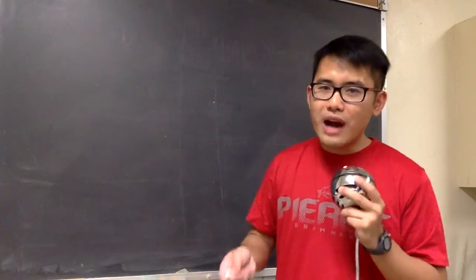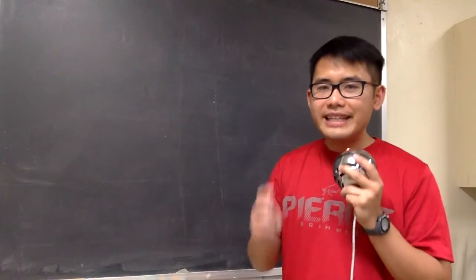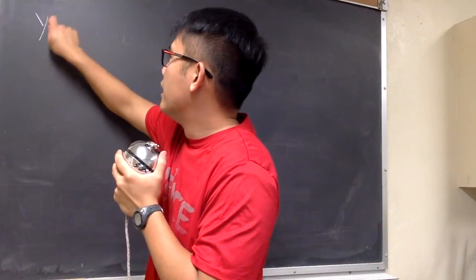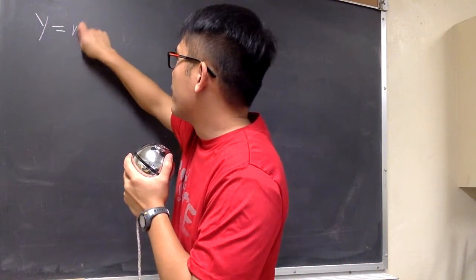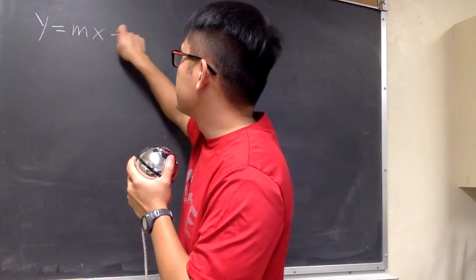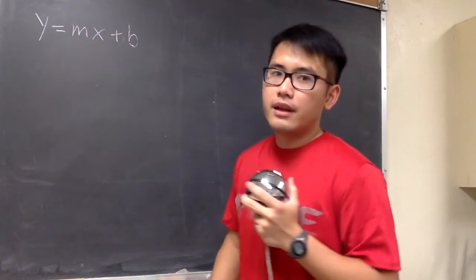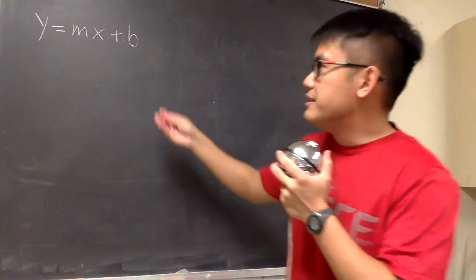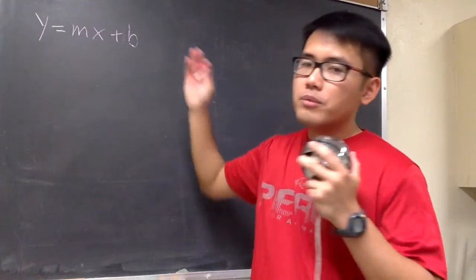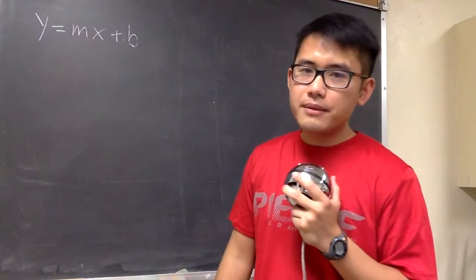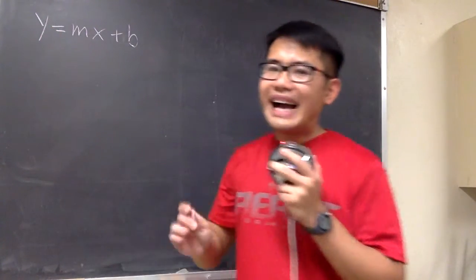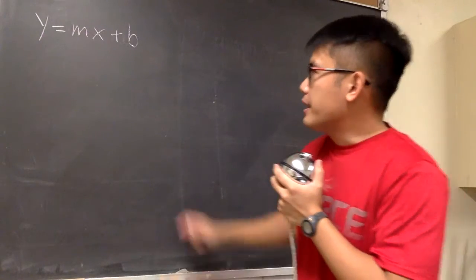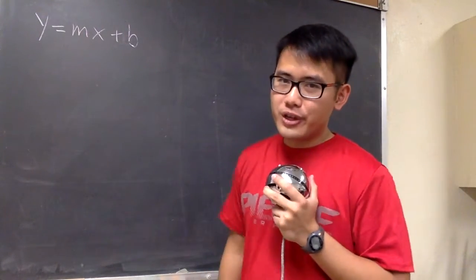To graph a line, ideally we want to have the equation in the form y is equal to mx plus b. As many of you guys know, this is the slope-intercept form of a line, where the y is isolated. And this is how we're going to utilize this equation.